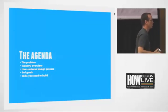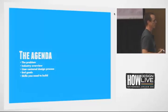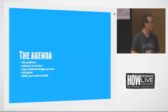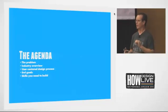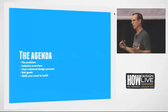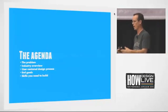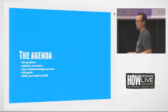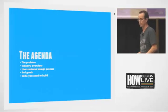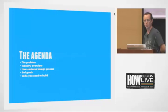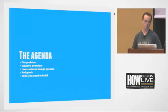In terms of an agenda: I want to look at the underlying problem we're currently facing, then an industry overview, then something known as the user-centered design process — which will essentially be a roadmap for where we're heading — and then end goals: what are the jobs, and ultimately, what are the skills we might think about in terms of building towards those jobs?